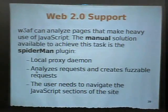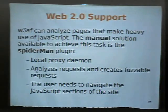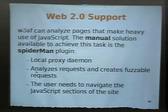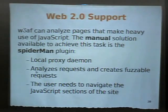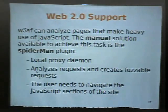You are going to be using a plugin called Spider-Man. Spider-Man is going to listen on a port using a proxy server, and you have to configure your browser to browse through Spider-Man. Spider-Man will catch all the requests and responses and create the fuzzable objects so audit plugins can find the vulnerabilities. This is a manual solution — you have to browse through all the sites using your browser and the specific proxy.